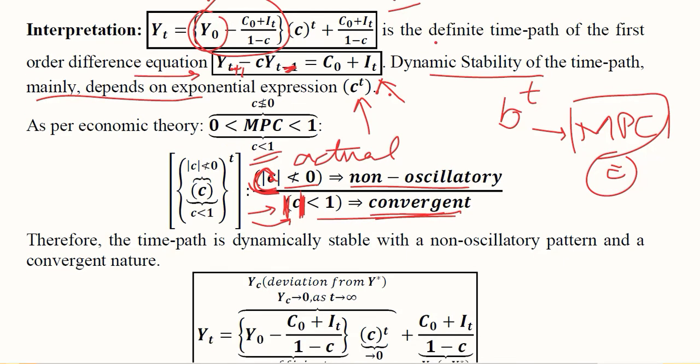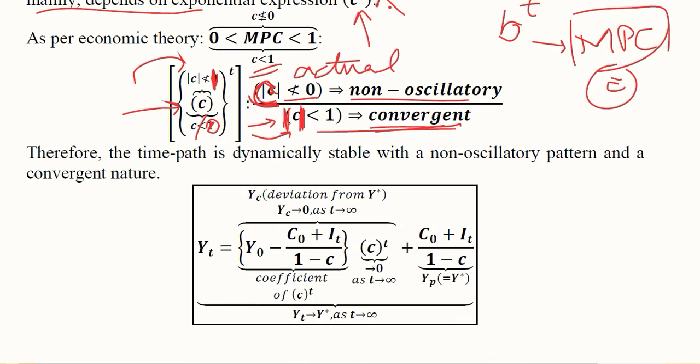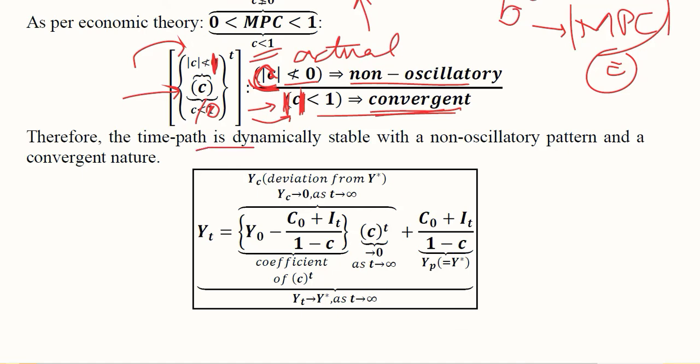Looking at this expression where c is written: its absolute value is less than 1, and its actual value is not less than 0. When this happens, we have a non-oscillatory and convergent case. Therefore, this time path is dynamically stable and non-oscillatory in nature.